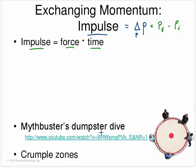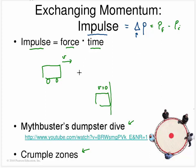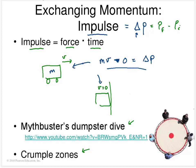A practical application is crumple zones in cars. Suppose a car is traveling at some speed and then comes to a stop — there's been a change in momentum equal to momentum final minus momentum initial, which is zero minus mass times initial speed. We can also write this change in momentum as force multiplied by time. If we want the force to be as small as possible, we need the time to be as large as possible.